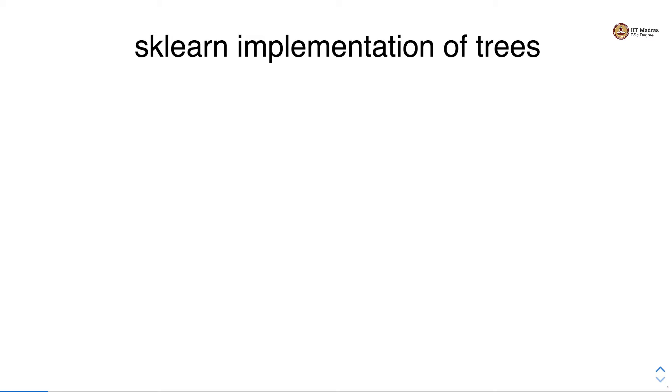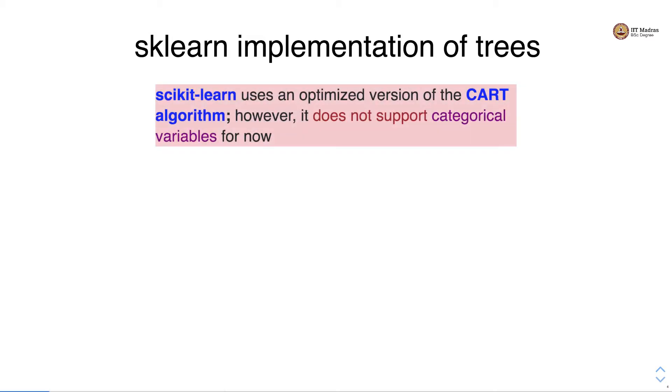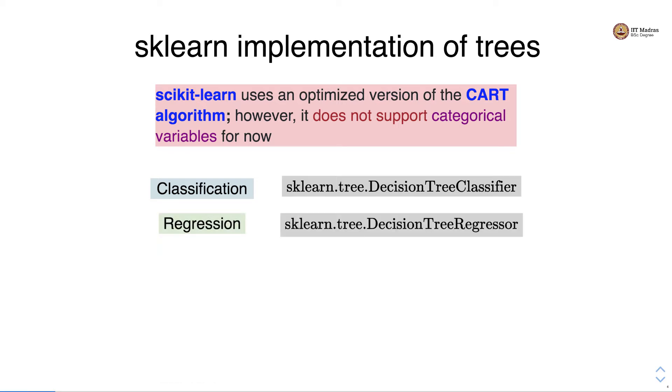Let's look at sklearn implementation of trees. sklearn uses an optimized version of the CART algorithm however it does not support categorical variables for now. For classification sklearn.tree.DecisionTreeClassifier API is used while for regression we use sklearn.tree.DecisionTreeRegressor. Both these estimators have the same set of parameters except for the criteria used for tree splitting.